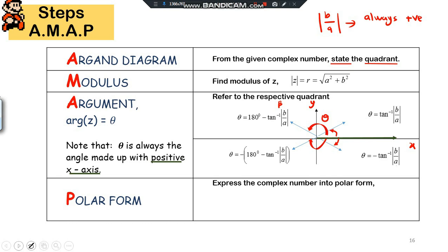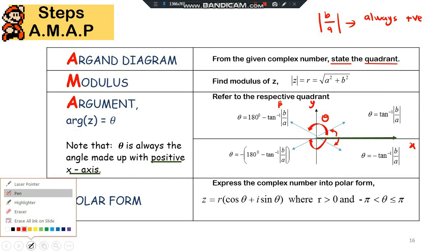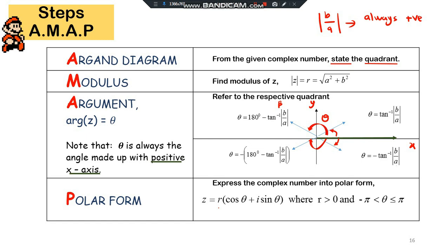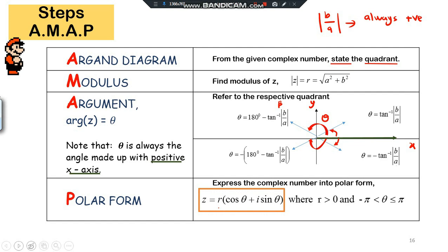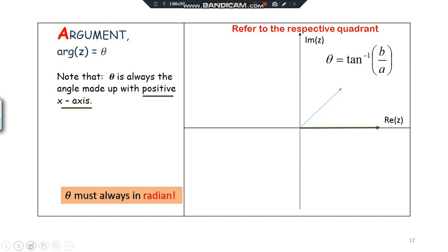In the fourth quadrant, put a negative sign in front: negative arctan(|b/a|). The last step P is to write z = r(cosθ + i sinθ) — substitute your value for r and your value for θ. The same theta value appears in both the cosine and sine terms.